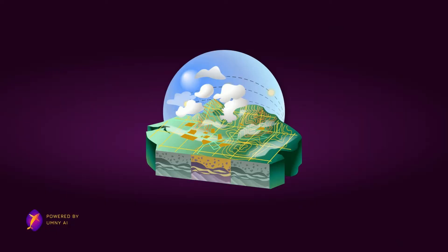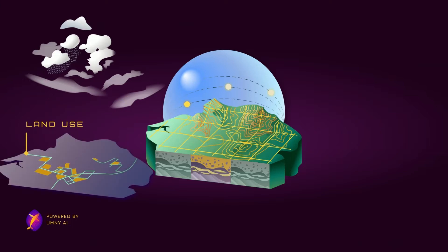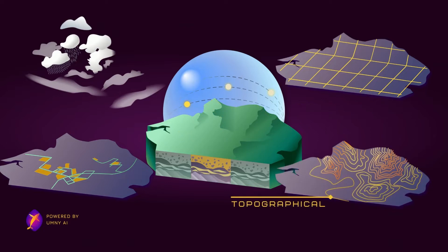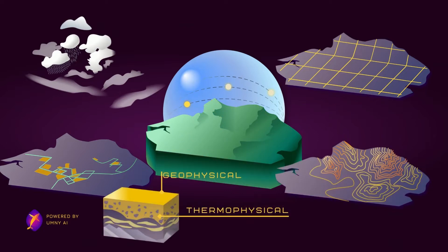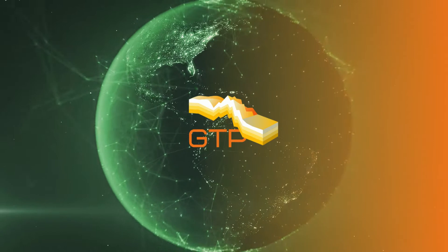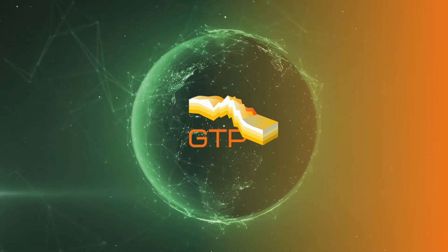We took each layer of the Earth's energy picture — such as climate information, land use types, geospatial data, topographical details, and the physical properties of the ground — and linked these features together to include all the details about the ground in our predictions. GTP is a carefully designed combination of artificial intelligence and physics-based algorithms.